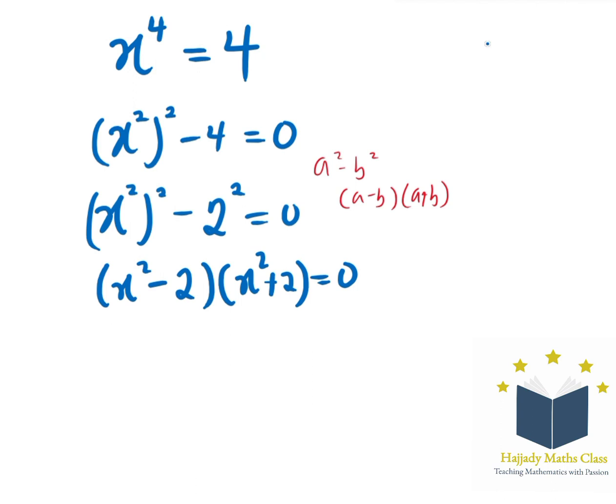So here, I'm going to have that x squared minus 2 equals to 0 or x squared plus 2 equals to 0.